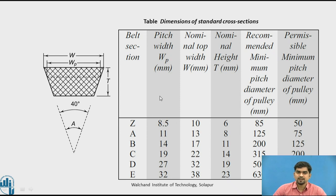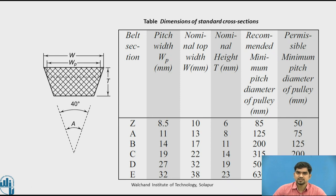Once the cross-section is selected, we find W (nominal top width), WP (pitch width), and T (nominal height) of the V-belt. For example, if the B-section belt is selected: pitch width is 14 mm, nominal top width is 17 mm, nominal height is 11 mm, and the recommended minimum pitch diameter of the pulley is 200 mm — so the smaller pulley diameter must be at least 200 mm.